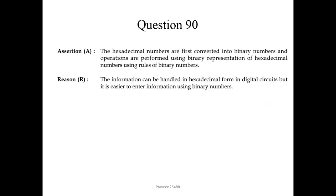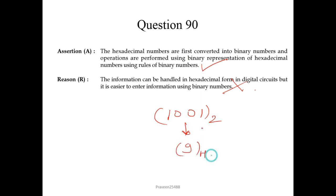Question 90. Assertion: hexadecimal numbers are first converted into binary numbers and operations are performed using binary representation — correct. Reason: information can be handled in hexadecimal form in digital circuits but it is easier to enter information using binary numbers — this is wrong. Four bits in binary like 1001 represent a single digit 9 in hexadecimal, so entering hexadecimal is actually easier than binary. Reason is wrong but assertion is true. So we choose option 3.